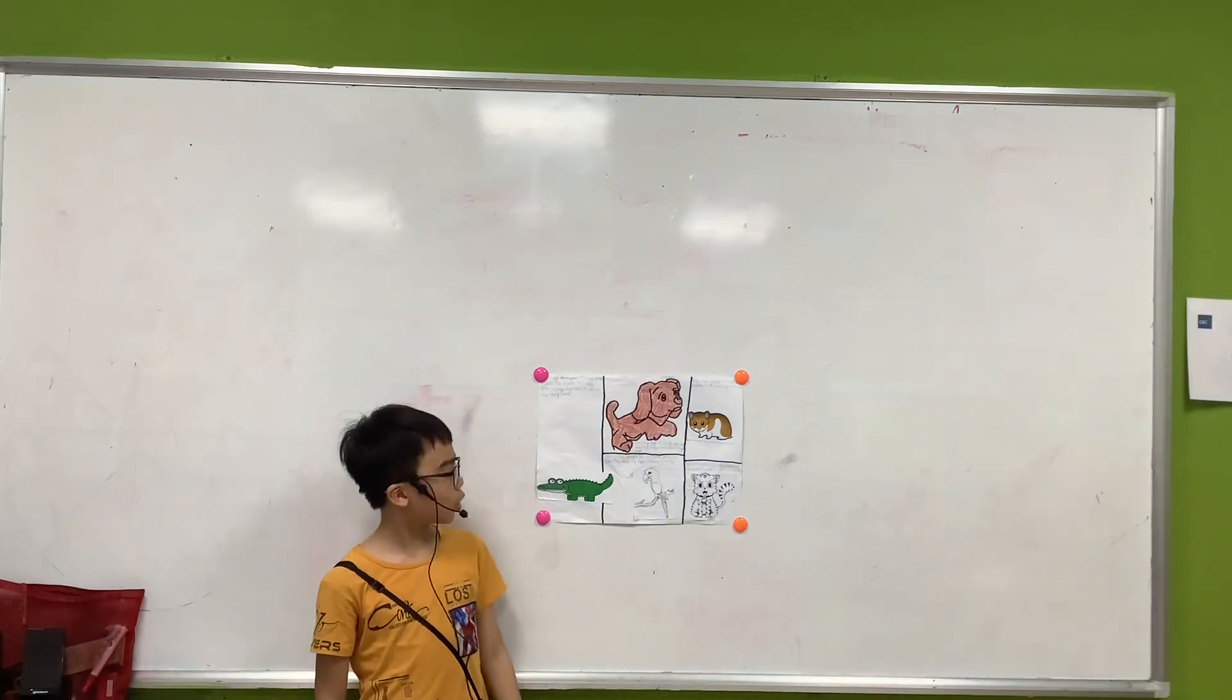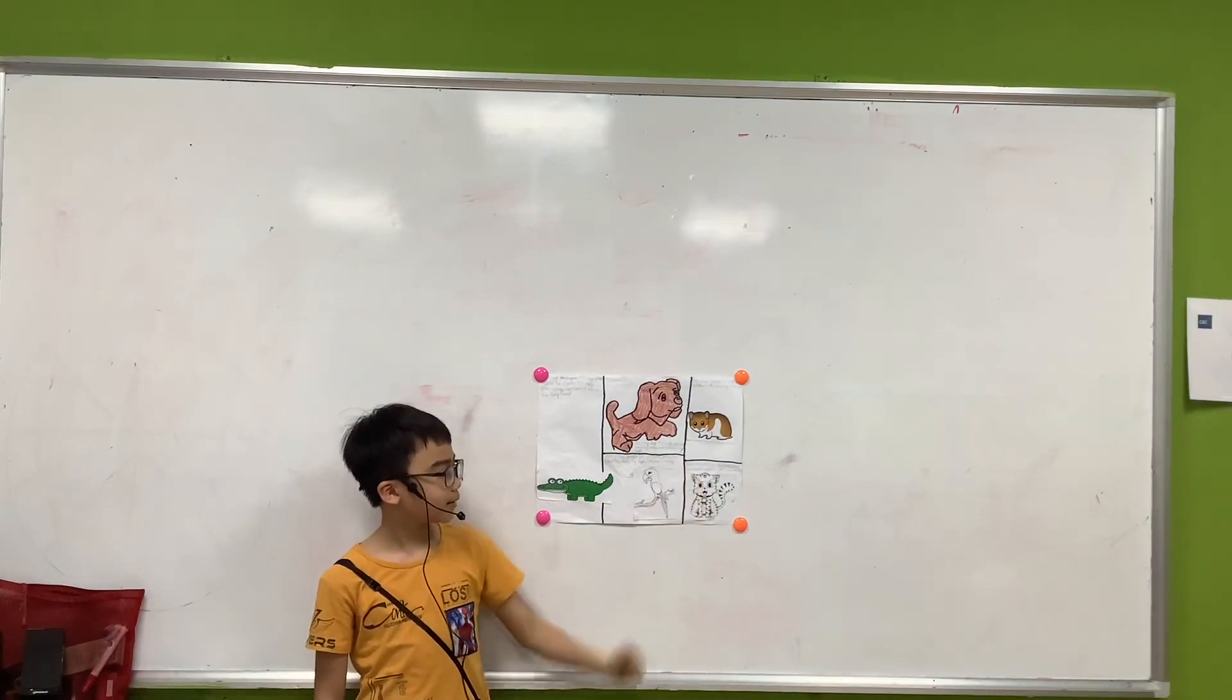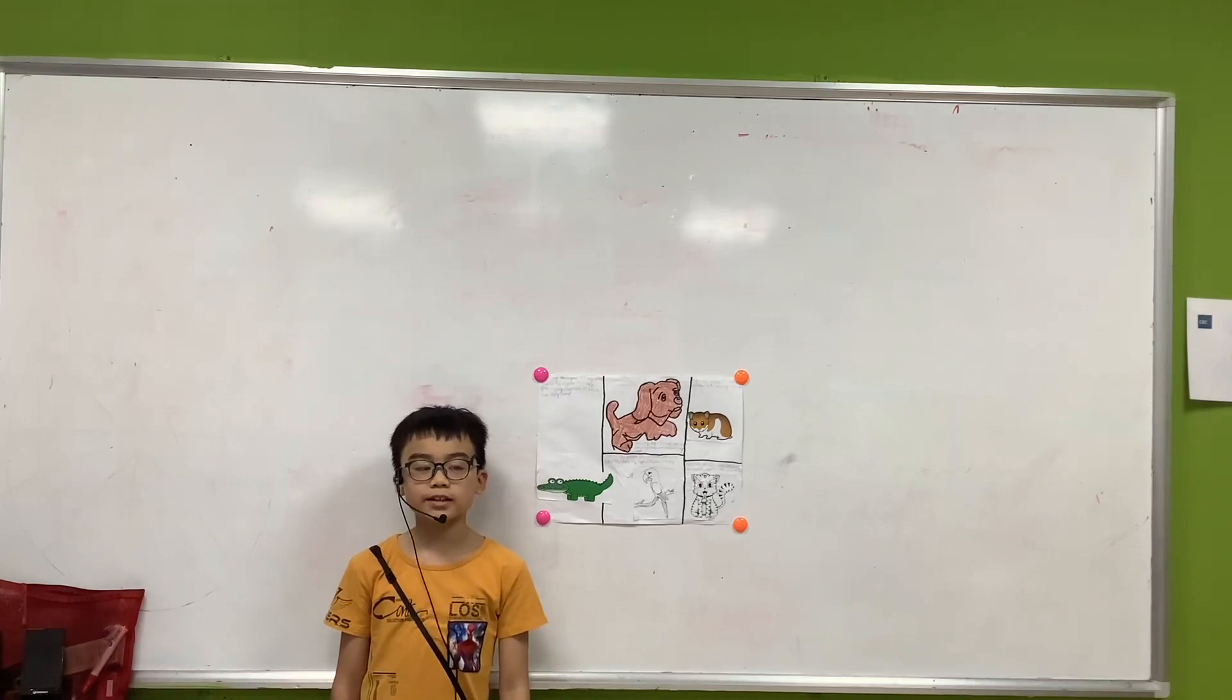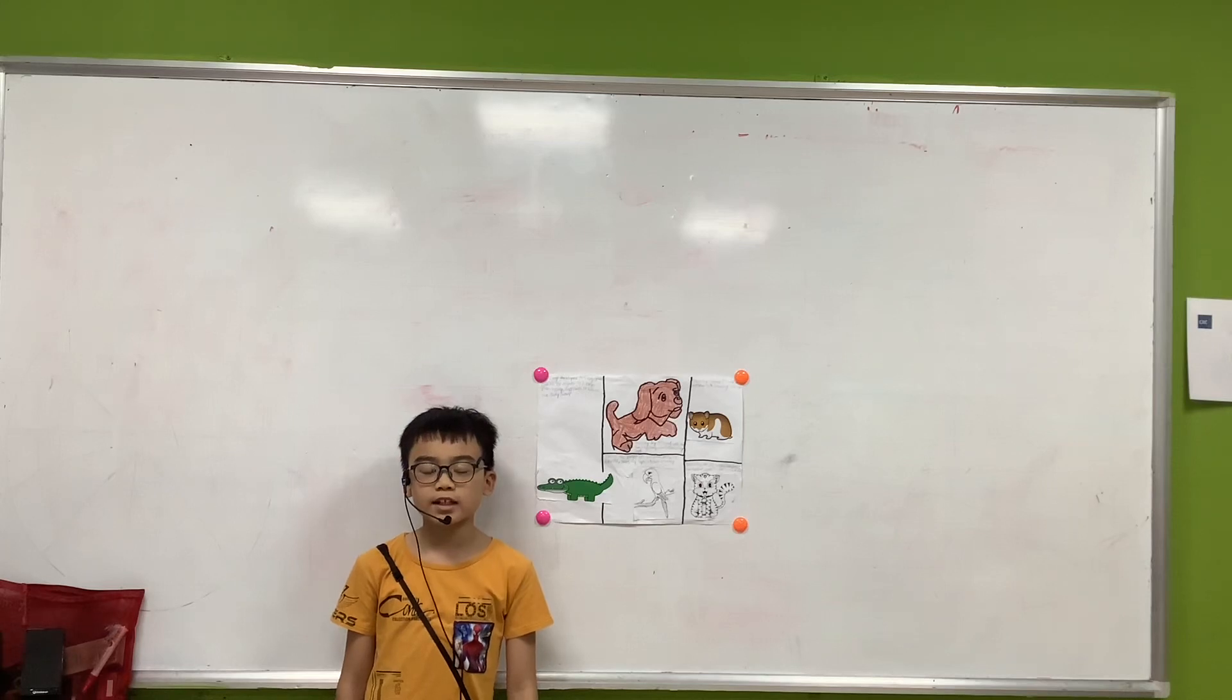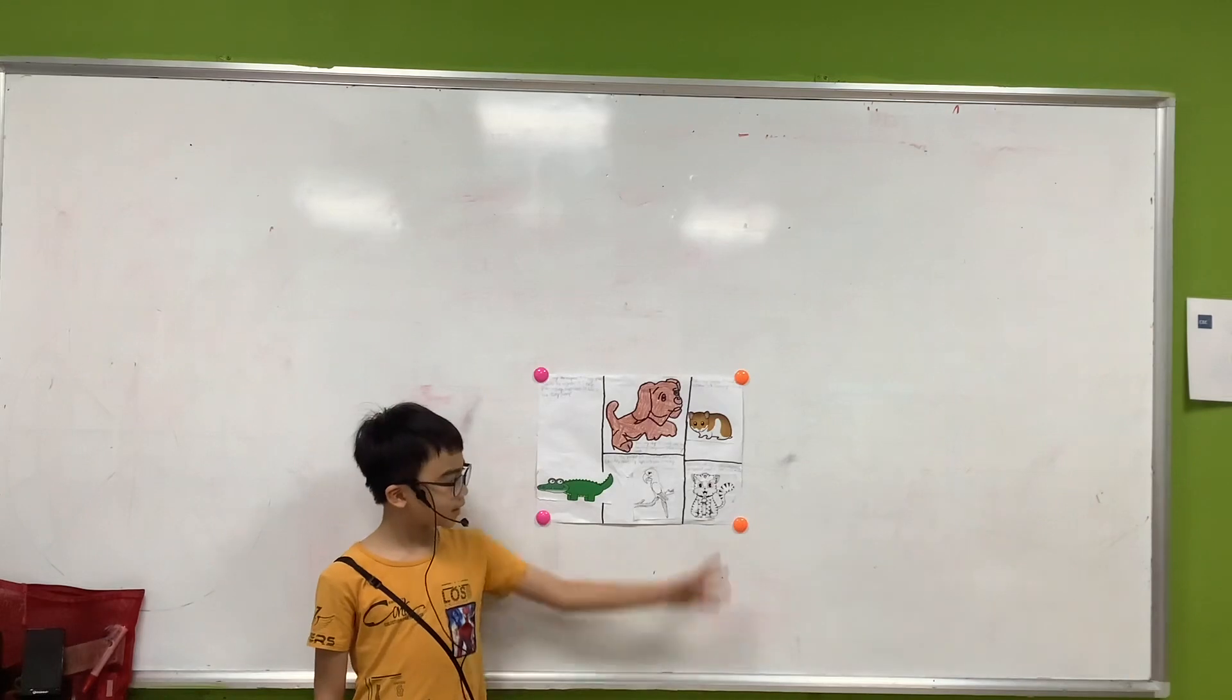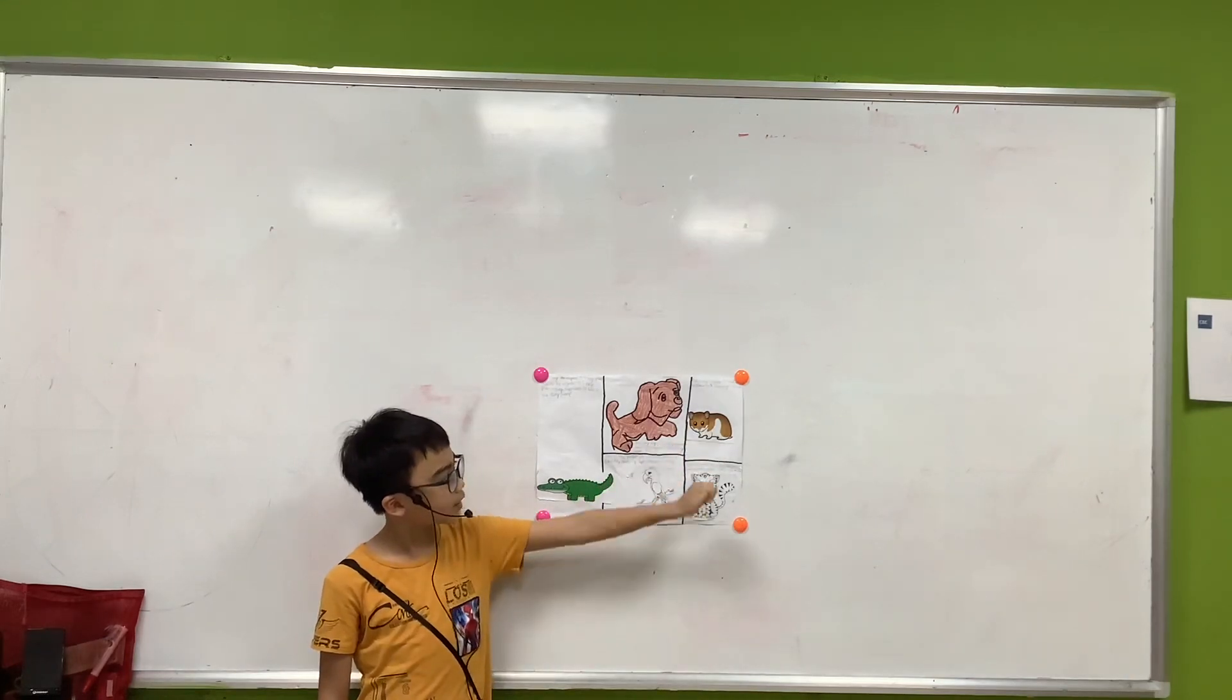The next animal is the cat. It's yellow, has a lot of fur, and has stripes. They have four legs, brown or black eyes, and two ears. They are in the mammal group. The next animal is my hamster.